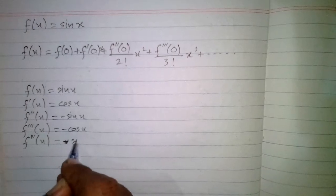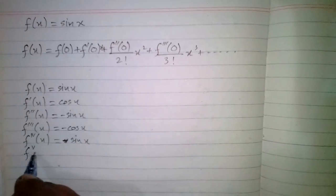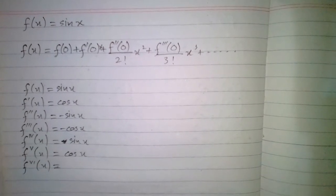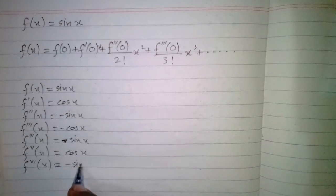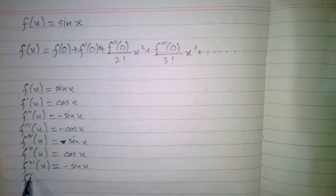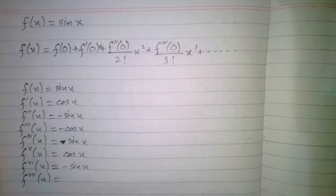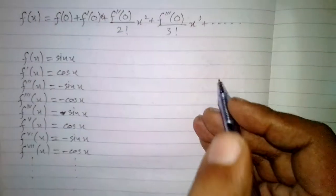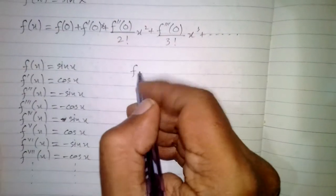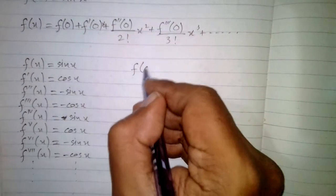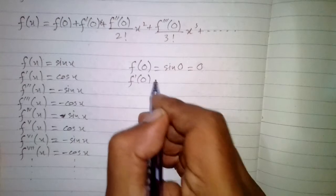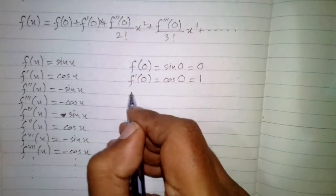The fifth derivative is cos x. Now we evaluate the derivatives at x equals 0. f(0) is sine 0, which equals 0. Then f'(0) is equal to cos 0, and cos 0 is 1.